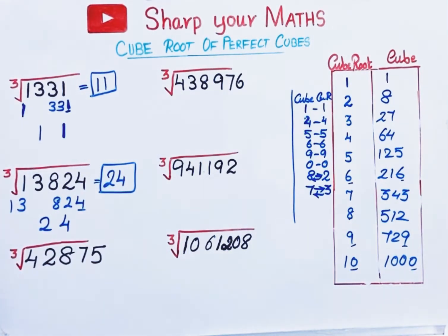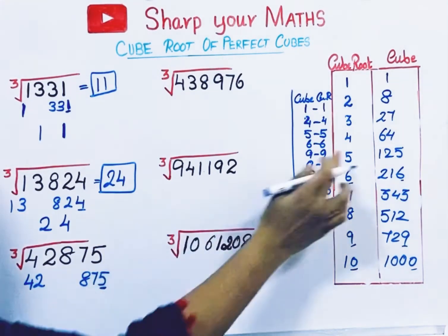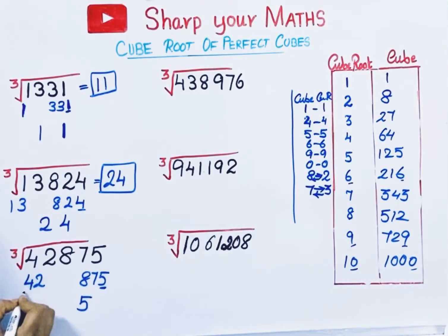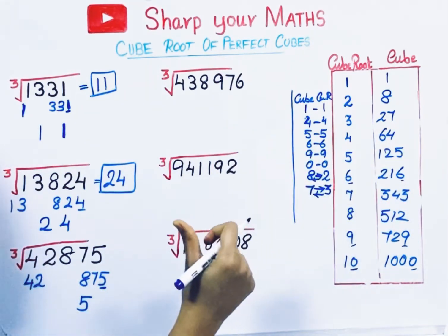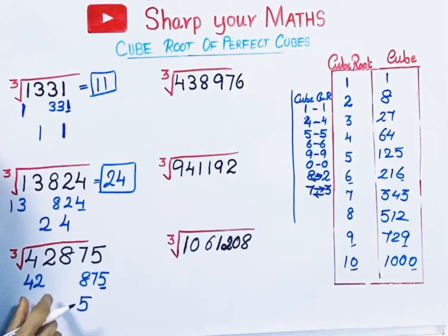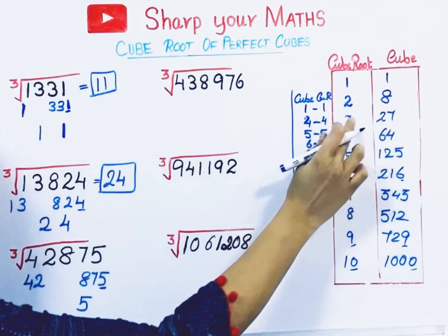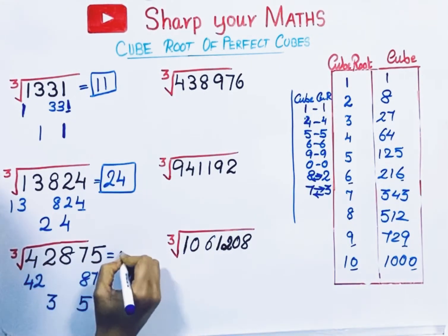Next number: take the last 3 digits as one group, remaining digits as another group. Check the unit digit — if the cube ends with 5, its cube root ends with 5. Take the left group, which is 42. 42 is close to the cubes 27 and 64. We take the number which is less than and close to 42, which is 27. Its cube root is 3. So the cube root of this number is 35.